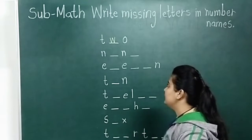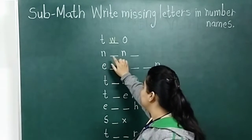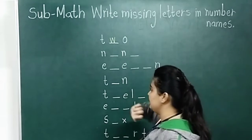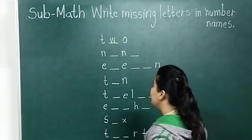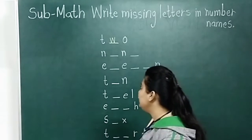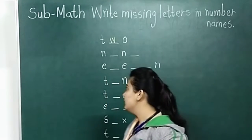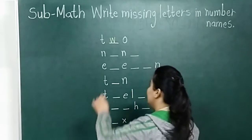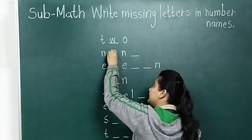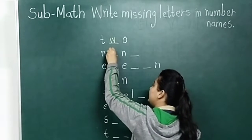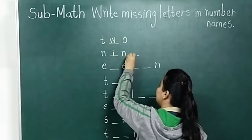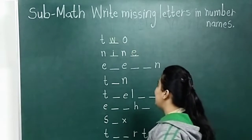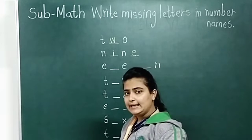Now next. The first letter is N, then dash, then N, then dash. So which number name is this? Nine. N is written, then we have to write I, then N is written, and then E is missing, so we write I and E. N, I, N, E — nine.